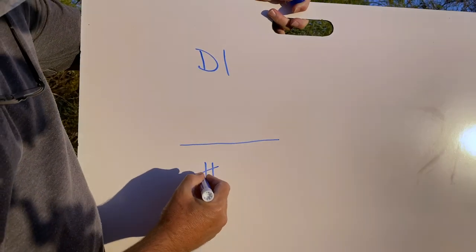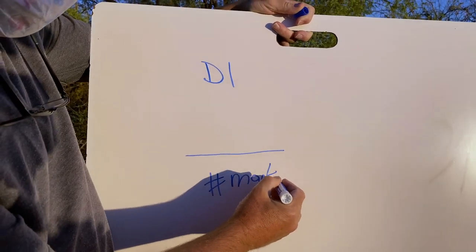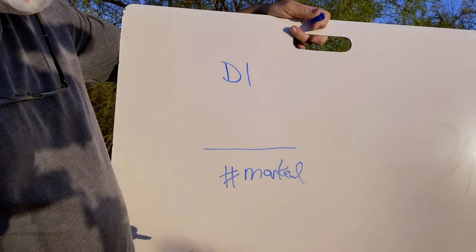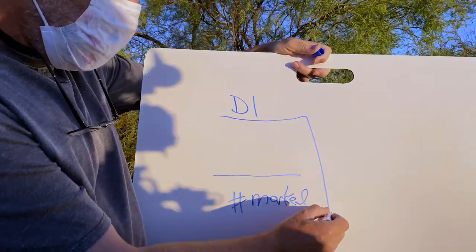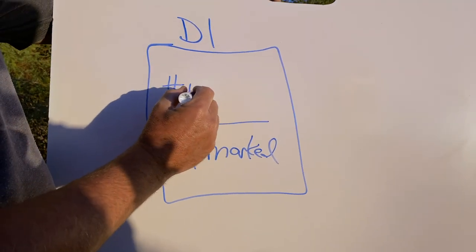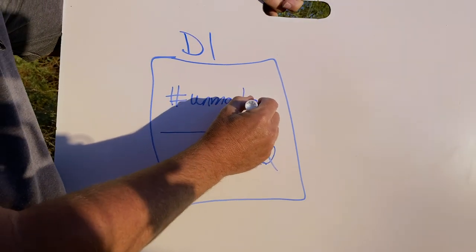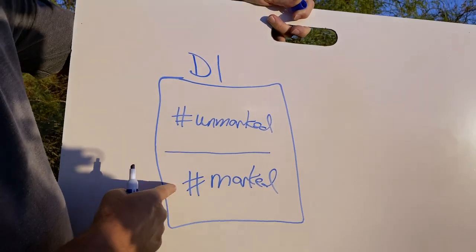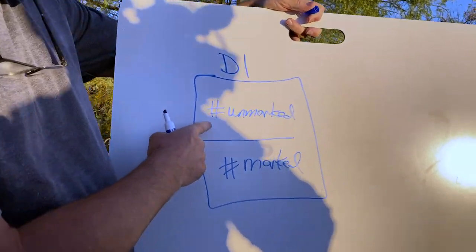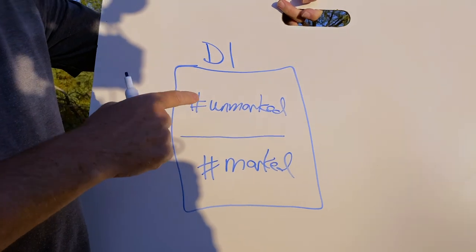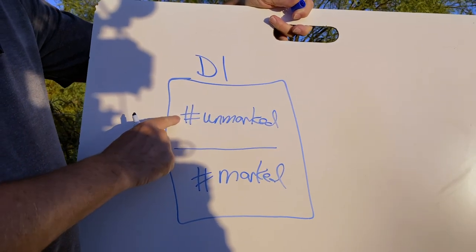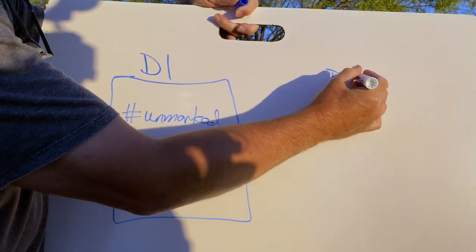The entire population of pack rats on campus consists of the number of marked plus the number of unmarked animals. We'll know the number of marked animals because we're going to check the traps and mark them. The number of unmarked animals — those on campus we didn't trap — we don't know, but we can estimate it based on what we get on day two.